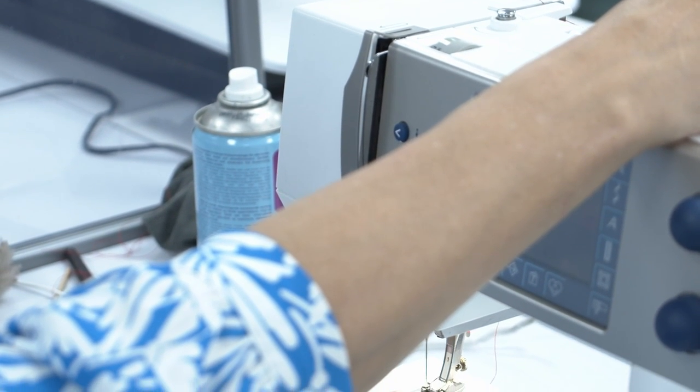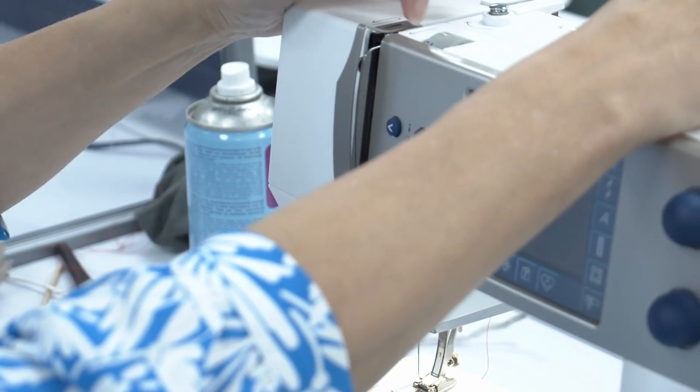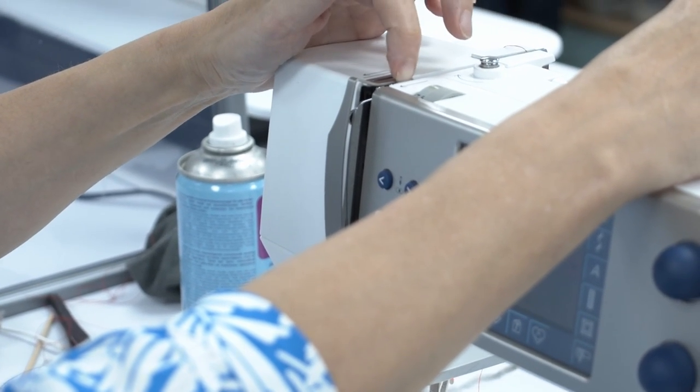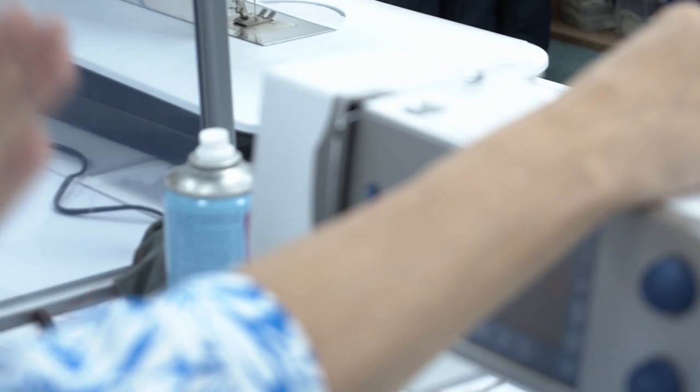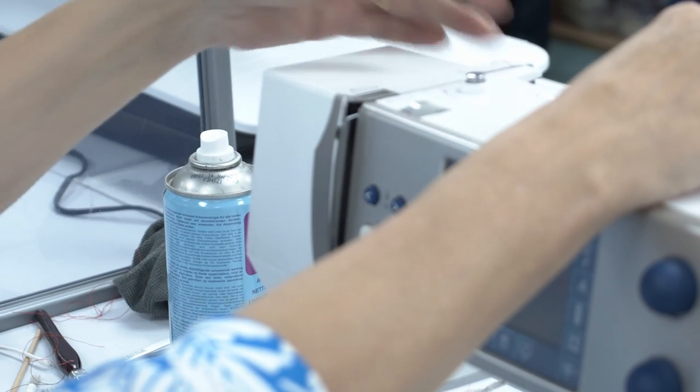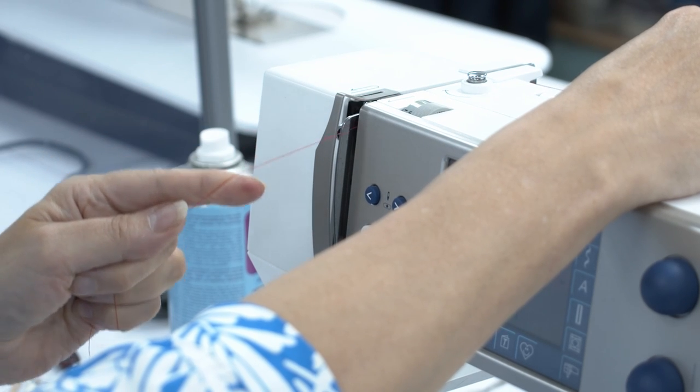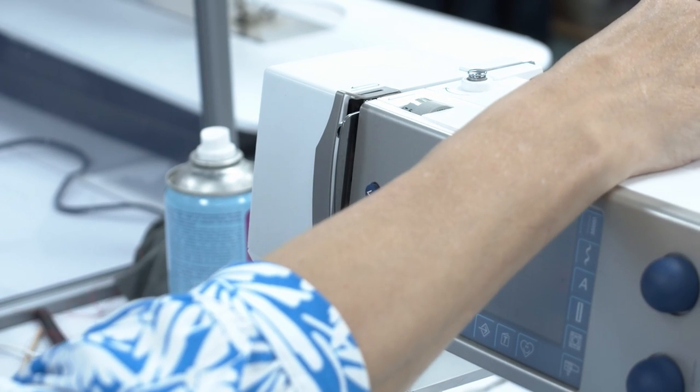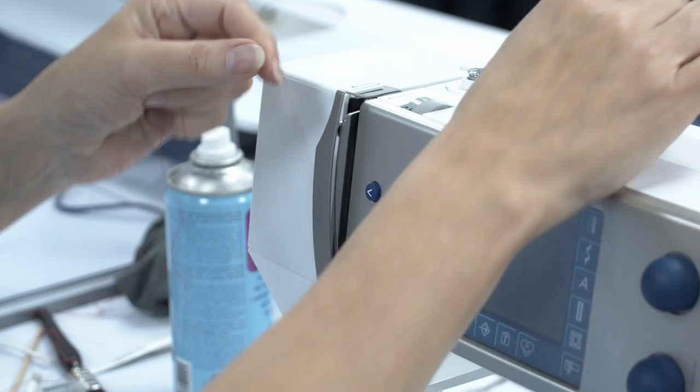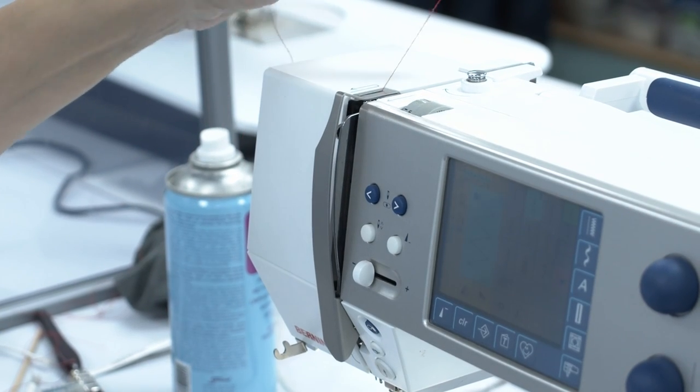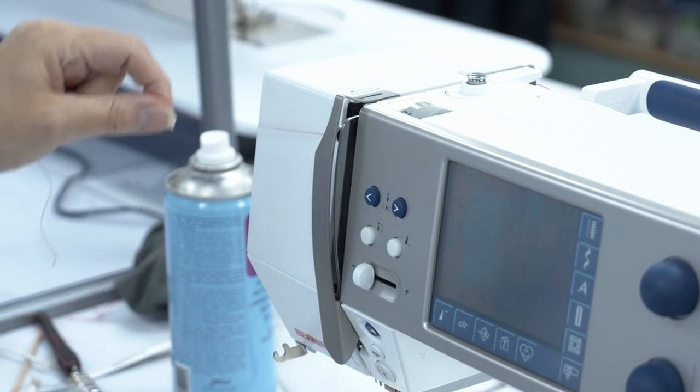My presser foot is up because I need to be sure that my tension discs are open so that the thread can sink in between them and stitch correctly from this first moment. I'm going down into the tension discs, around the check spring, in on the right-hand side, out on the left-hand side, so I'm in the check lever.